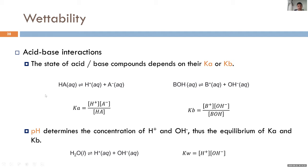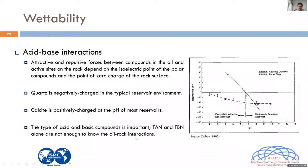For an acid, at very low pH — high H⁺ concentration — we tend to have more non-ionized form; as pH increases toward neutral or basic, concentration of the negatively charged ionized form increases. For bases, the opposite: at high pH we have non-ionized form, and at lower pH — neutral or acidic conditions — we have higher concentration of the positively charged form. We need to balance attractive and repulsive forces, considering pH, ion concentration, minerals, and oil components.